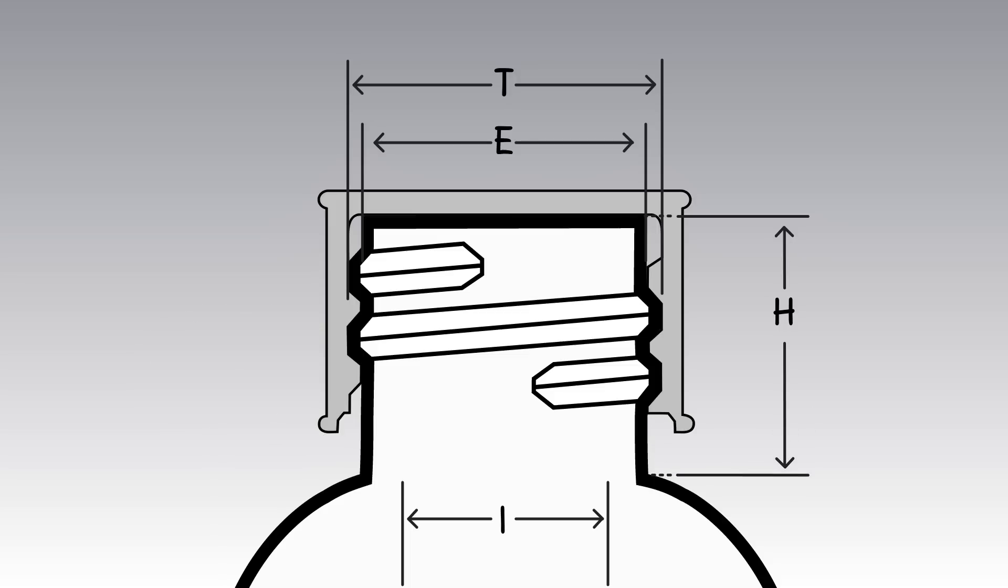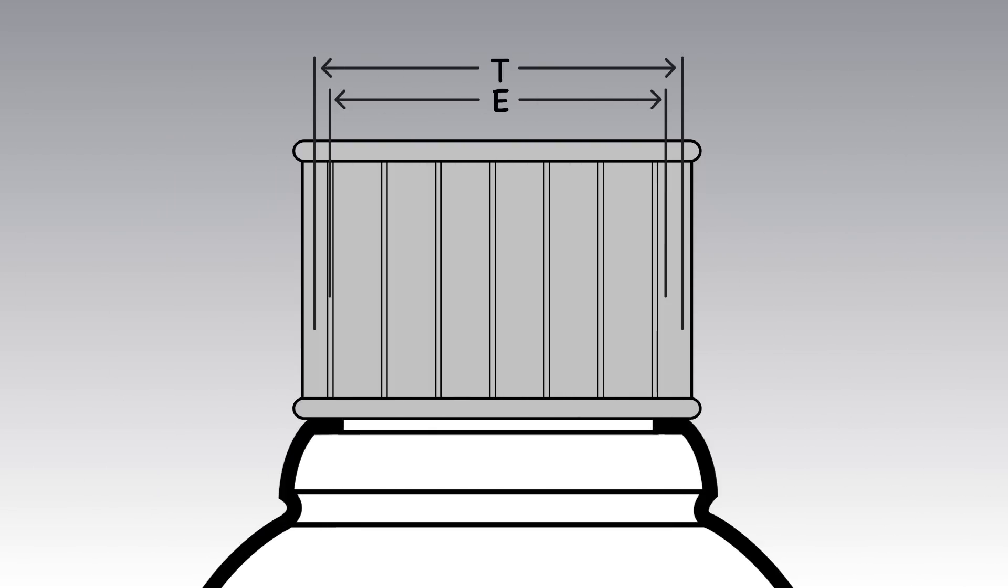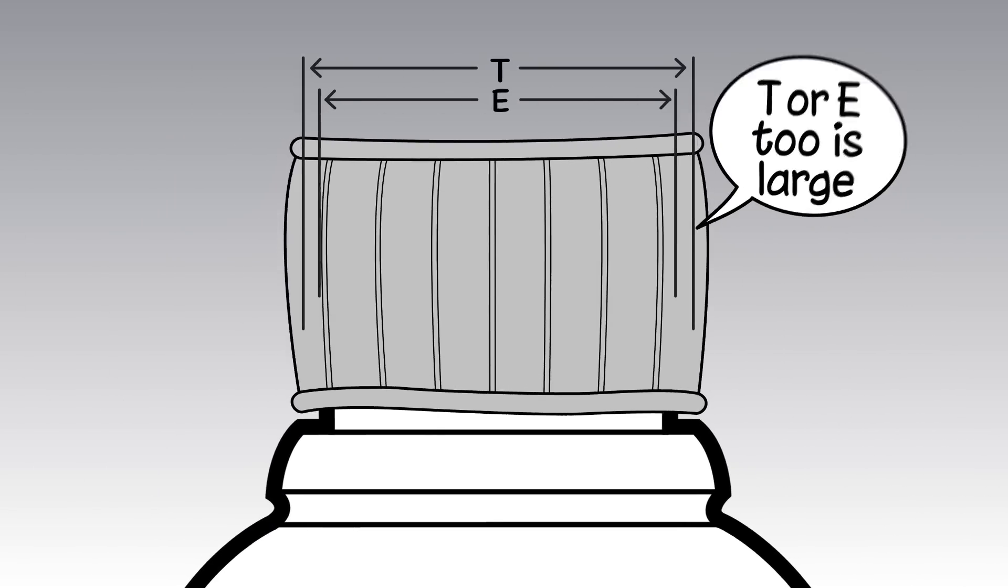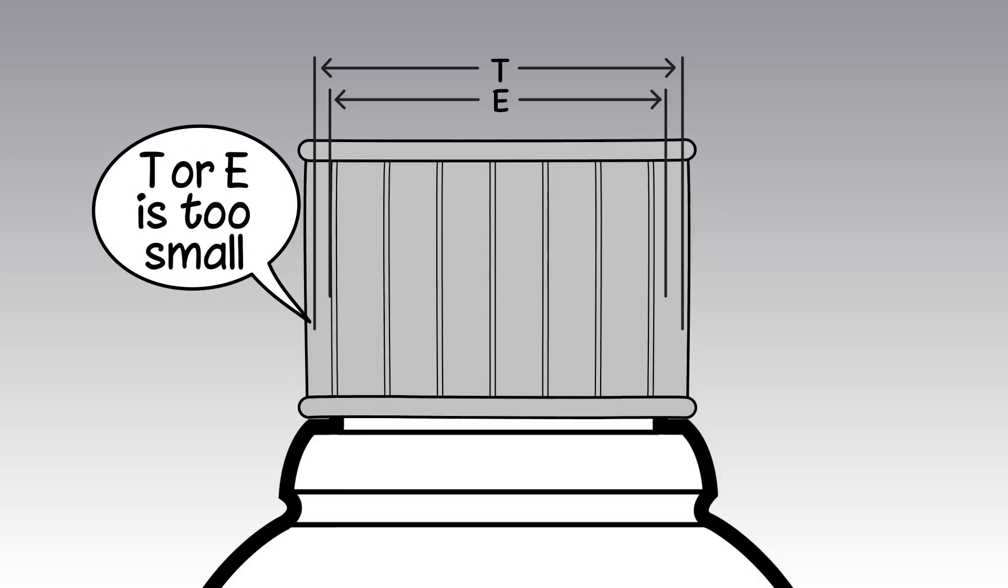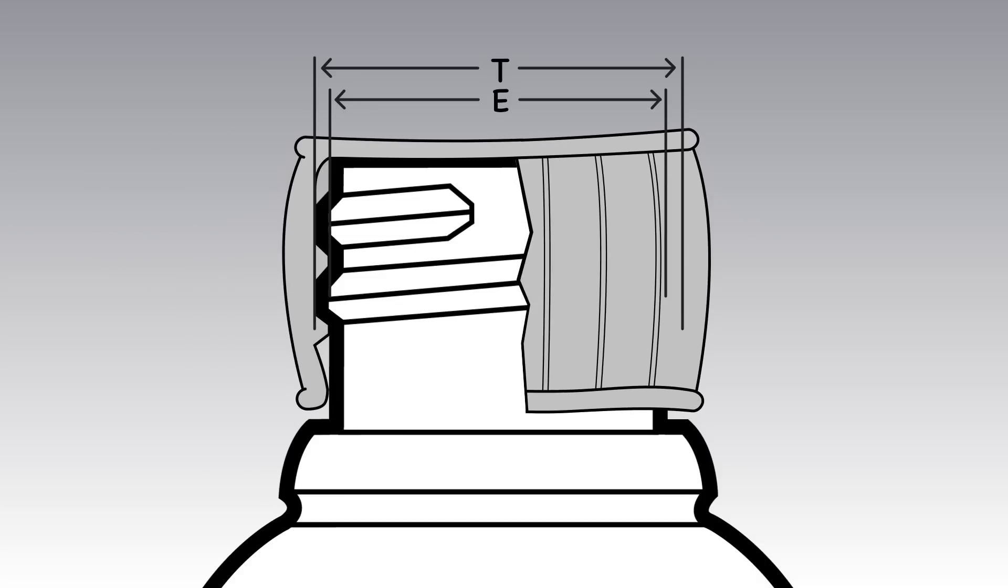Closure finish dimension letters correspond to the related bottle finish dimensions. If the bottle's T or E dimension is too large, or if the closure's T or E dimension is too small, it can potentially lead to torque issues.